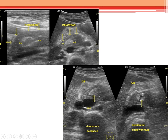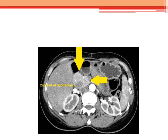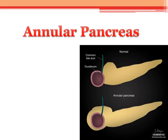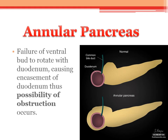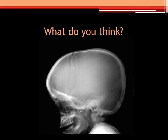Something echogenic inside the pancreas — what could cause this? This is bowel encasement. We traced it upward and backward, and there was intraluminal fluid-like content, suspicious for the duodenum. A CT scan was done and confirmed the diagnosis, though it was already confirmed by ultrasound. This is a case of annular pancreas — the ventral bud fails to rotate with the duodenum, so the duodenum becomes encased by the pancreas.